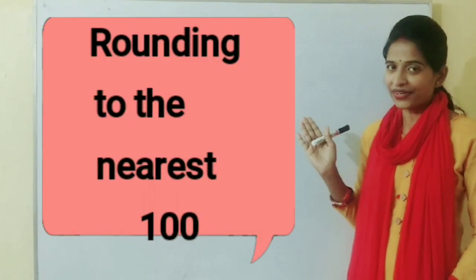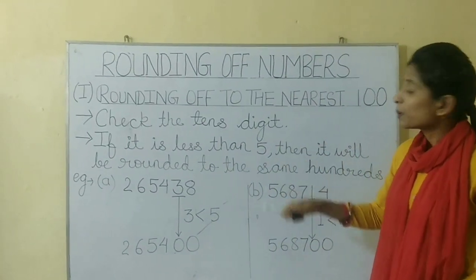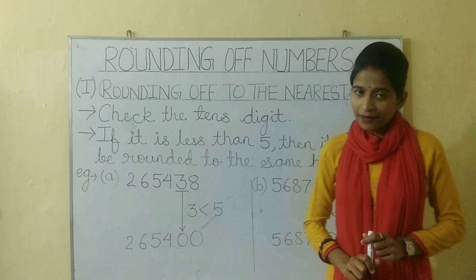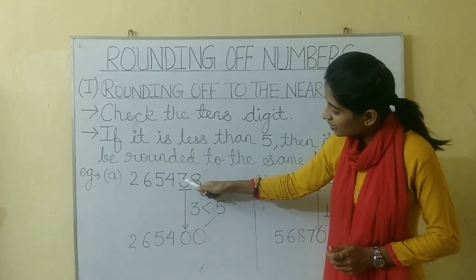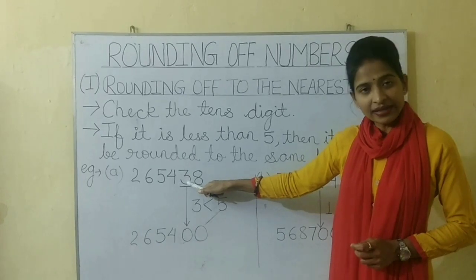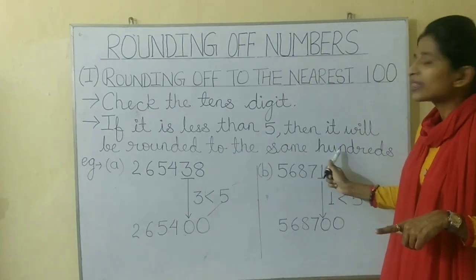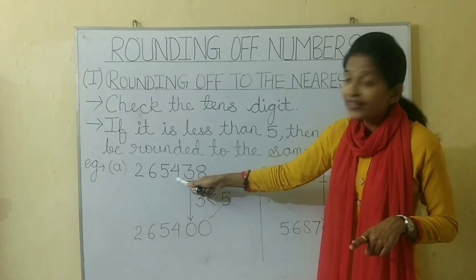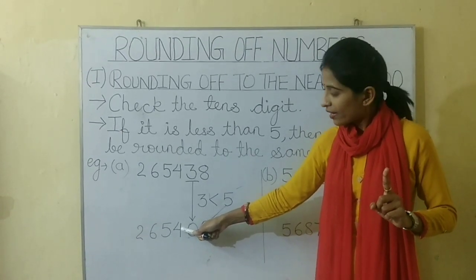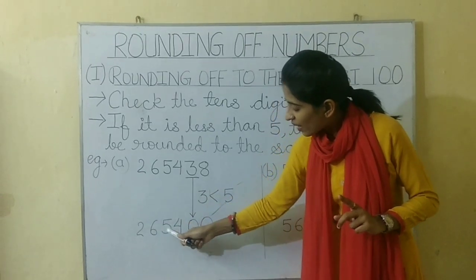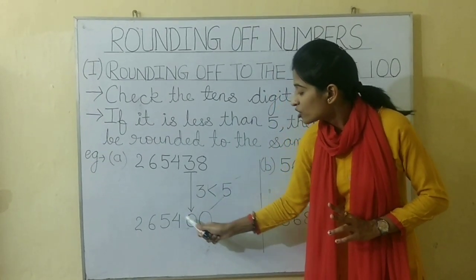Rounding to the nearest hundred. We will check the ten's digit. If it is less than 5, then it will be rounded to the same hundred. Look at this example. Here 3 is the ten's digit. We check whether it is greater than 5 or less than 5 — yes, 3 is less than 5. So it will remain in the same hundred. The hundred's digit is 4 and it will remain 4. There will be no change. So the answer will be 265400.